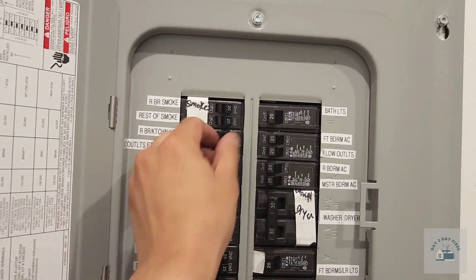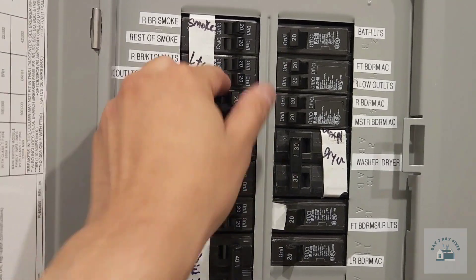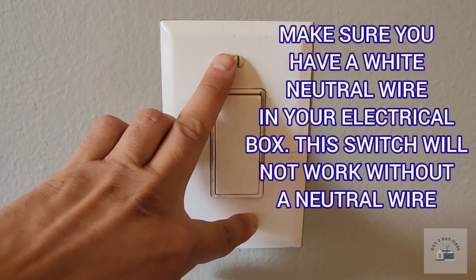Alright, now that that's out of the way, some breakers are double and some are single, so make sure you turn off the right breaker for your switch. We're testing it out, turning on the switch. There's no lights, so we're good.